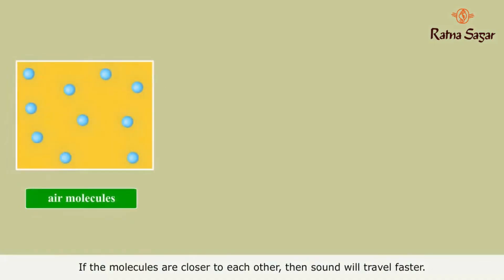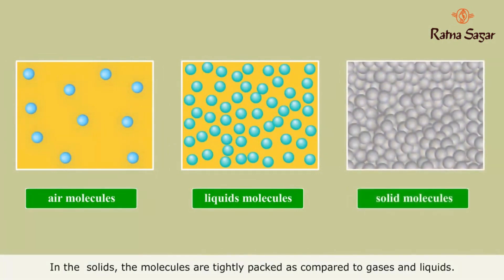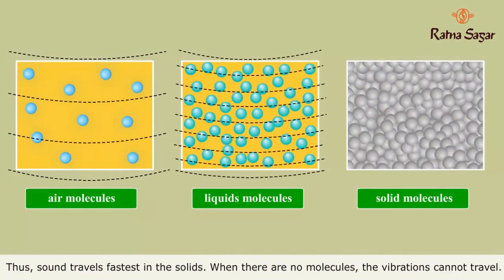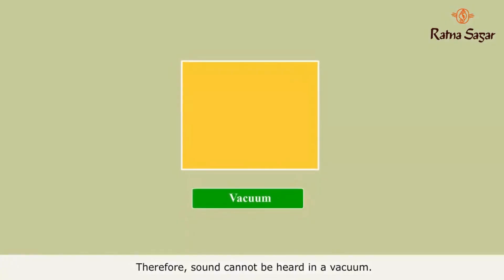If the molecules are closer to each other, then sound will travel faster. In liquids, the molecules are closer to each other than in gases. In solids, the molecules are tightly packed as compared to gases and liquids. Thus, sound travels fastest in solids. Where there are no molecules, the vibrations cannot travel. Therefore, sound cannot be heard in a vacuum.